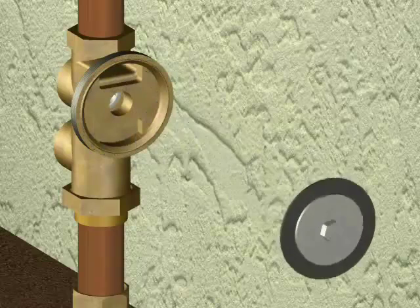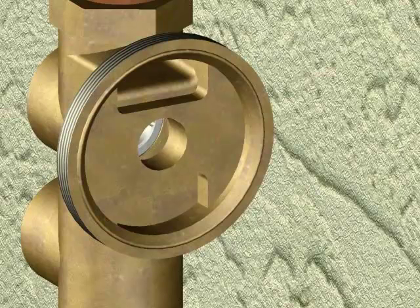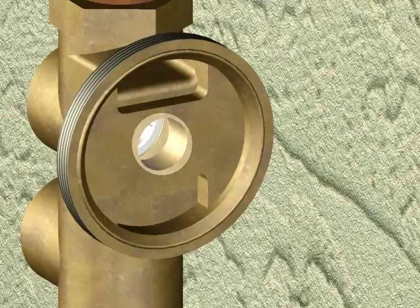Remove the stem assembly. Inspect the area in the body where the O-ring moves for pitting or scratches. This area must be smooth for the valve to operate correctly. You can sand the bore with an emery cloth if needed.